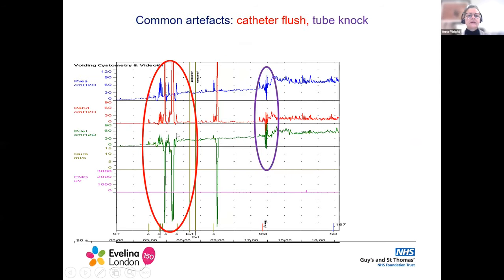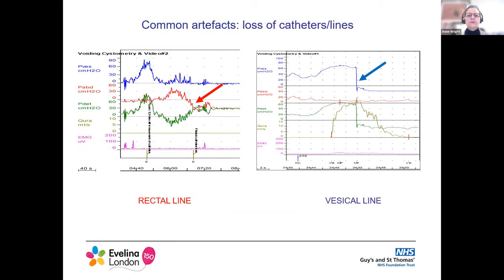Here are two very common artifacts. Catheter flush: going along in the P-ABD line, the subtraction isn't complete, so the urodynamicist has flushed the rectal catheter on two occasions with a subtraction in the P-DET line — that's fairly obvious. Here, all three lines have had sudden movement because the catheters have been knocked. Loss of catheters is also fairly common: we get a nice rectal contraction with the corresponding negative deflection in the P-DET line, and then the rectal catheter is actually passed. Likewise, during voiding, the urethral line is passed and you get a sudden drop in pressure.